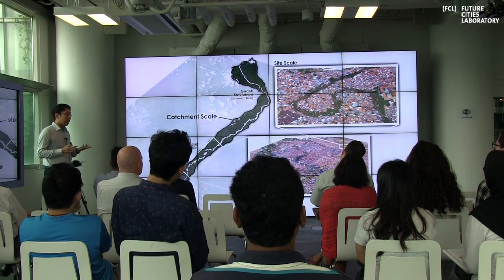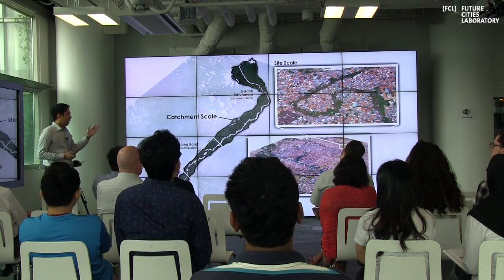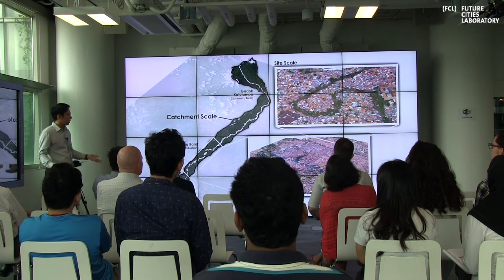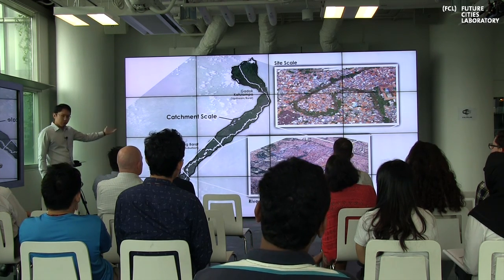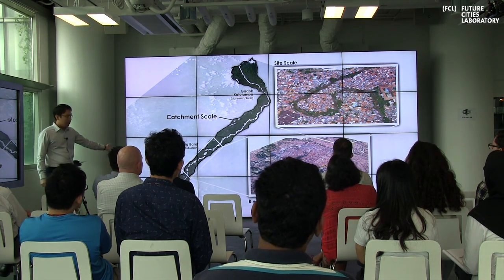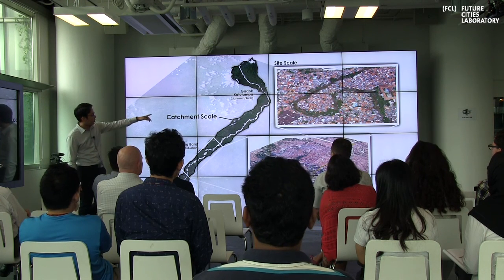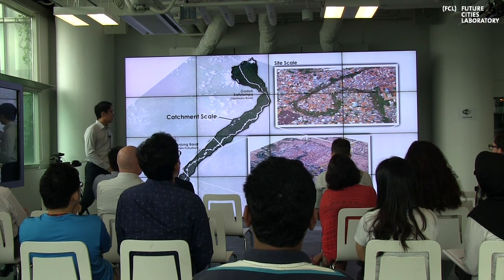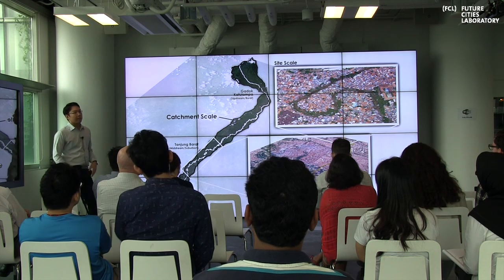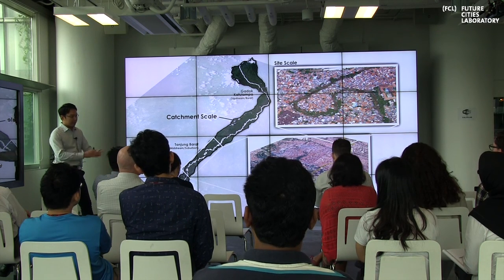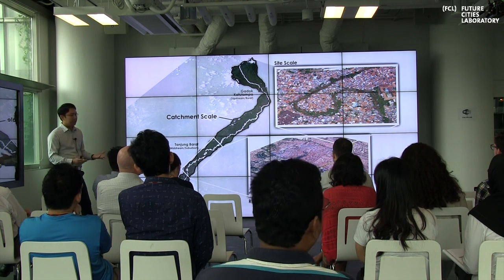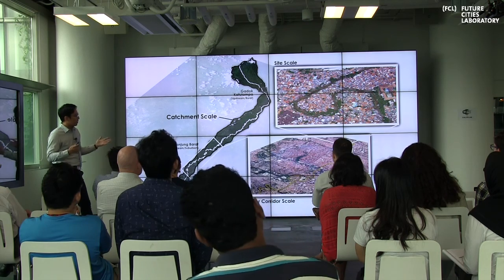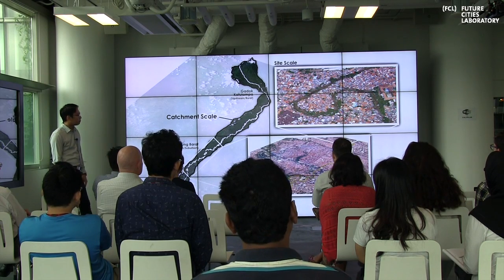You can collect point clouds at any scale — at the entire catchment scale using satellites, at the river corridor scale, or at the site scale using a UAV. You could have a million points covering a single doorknob if you so desire. All of these can be nested within the same three-dimensional environment.